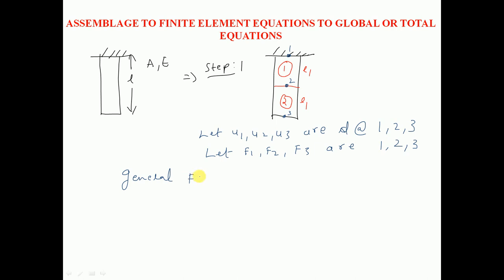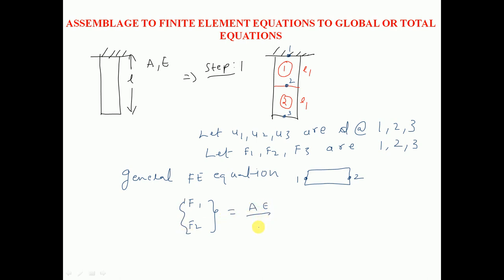The general finite element equation for a one-dimensional element having two nodes is: {f1, f2} = (AE/l) × [1, -1; -1, 1] × {u1, u2}. This is the finite element equation for a one-dimensional bar element with two nodes.